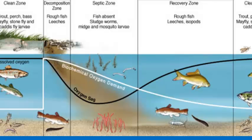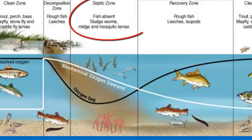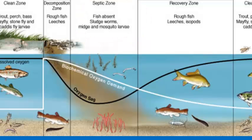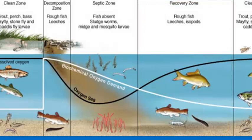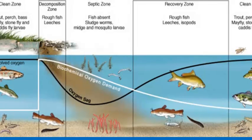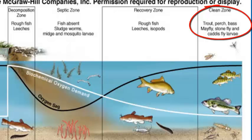Moving further downstream, oxygen availability is greatly reduced due to increased decomposition — we call this the septic zone, where there is so little oxygen that fish can't even be present. Only organisms like sludge worms and mosquito larvae survive there. A little further down is the recovery zone, where the amount of waste is very low so oxygen levels increase and fish return. Finally, way down the river is the clean zone, where waste has been completely decomposed and it's almost as though it wasn't even present.